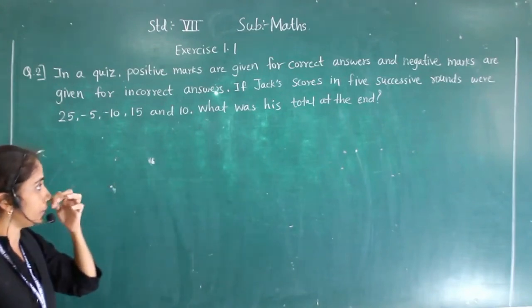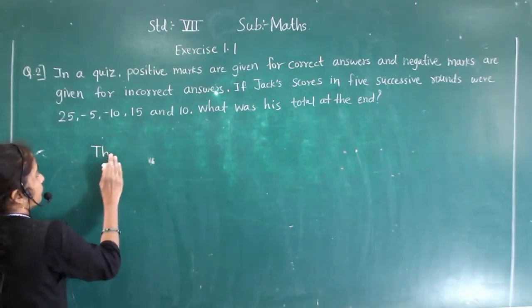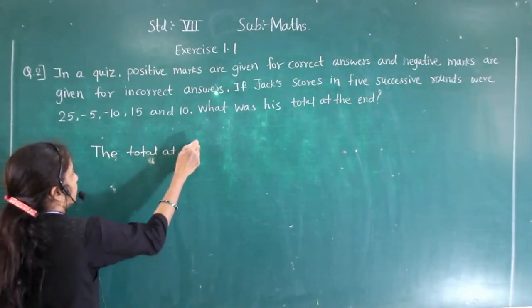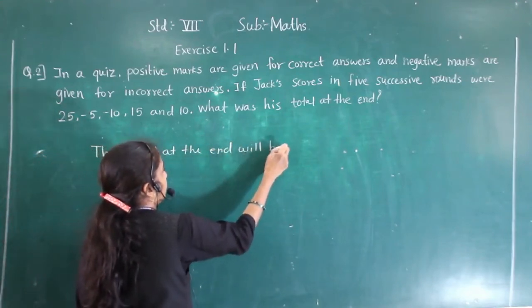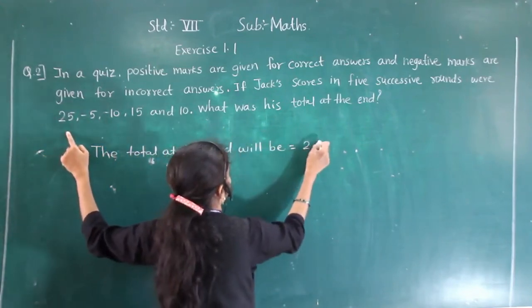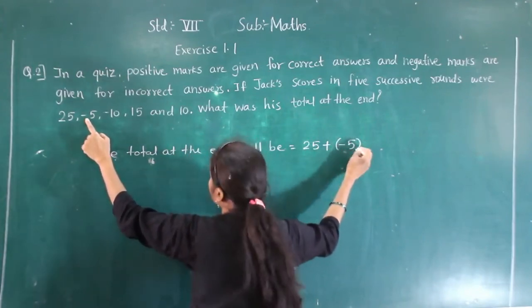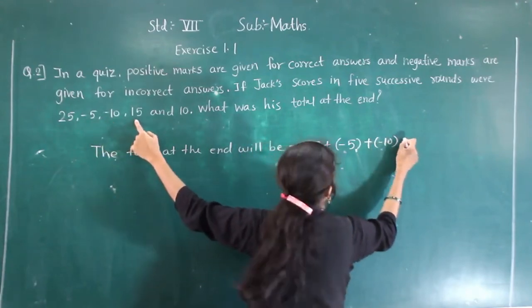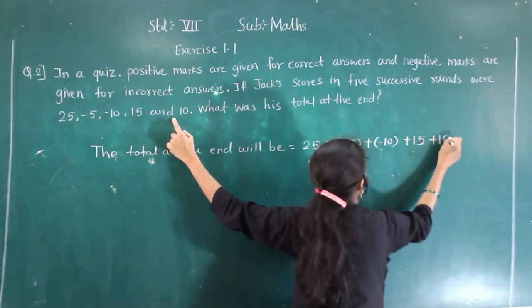We have to find the total. The total at the end will be. Now what will I write first? 25, plus minus 5, plus minus 10, plus 15, plus 10.